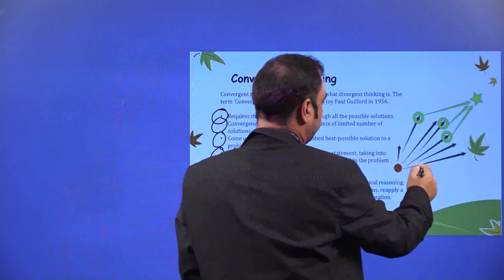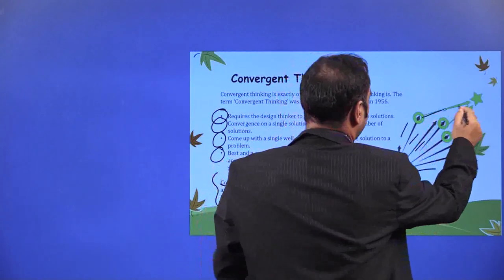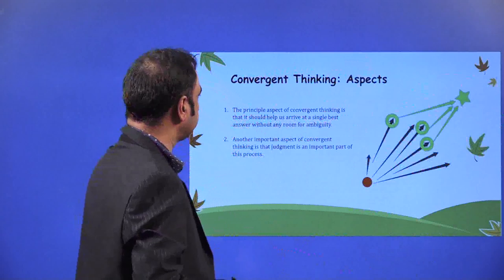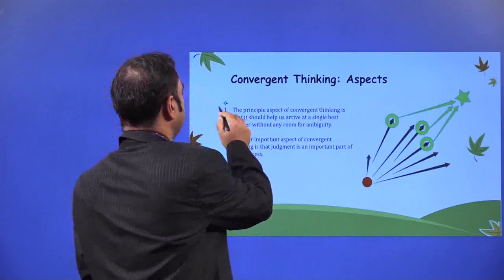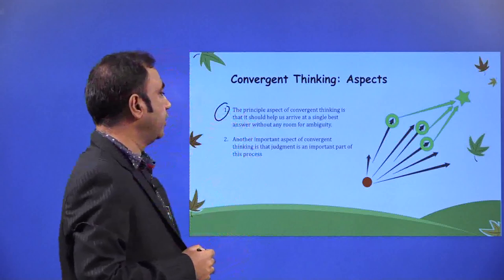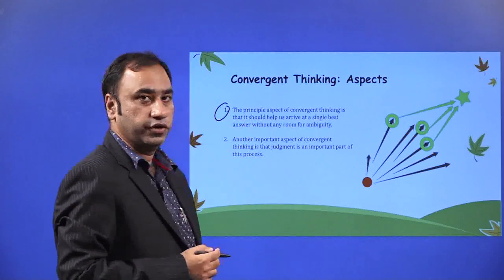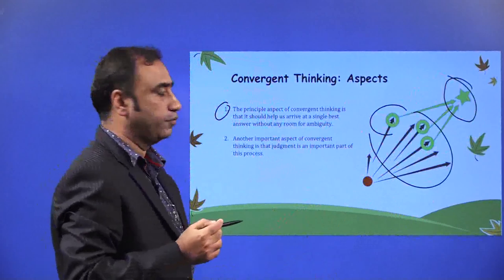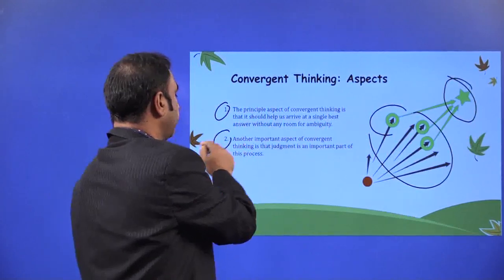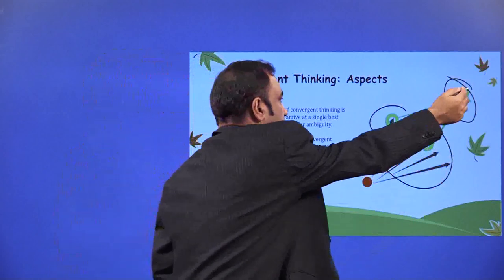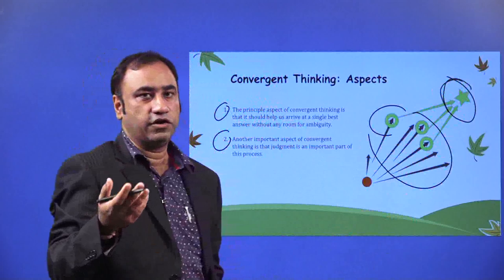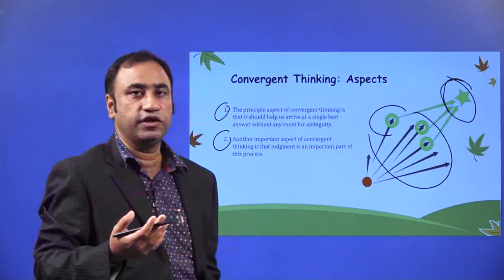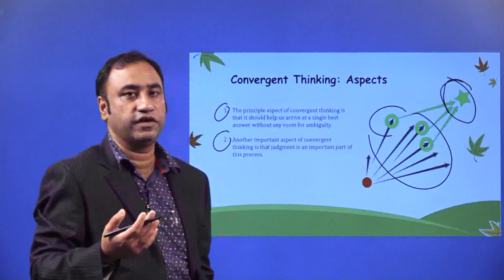So we have multiple solutions coming out from the divergent thinking — once they come up, we converge to one particular solution, and this becomes our Eureka solution. The principal aspect of convergent thinking is that it should help us arrive at a single best answer without any room for ambiguity. Another important aspect of convergent thinking is that judgment is an important part of this process — we are judging and finalizing on one particular idea or solution. It is a selection of a particular idea from many different ideas, where decision making is a very important aspect.